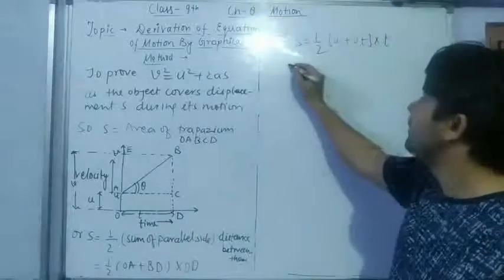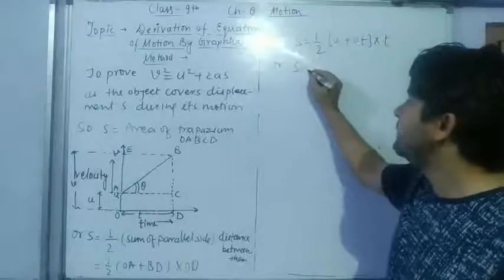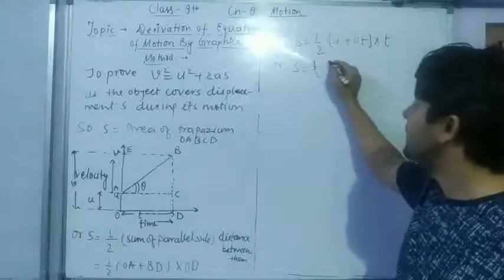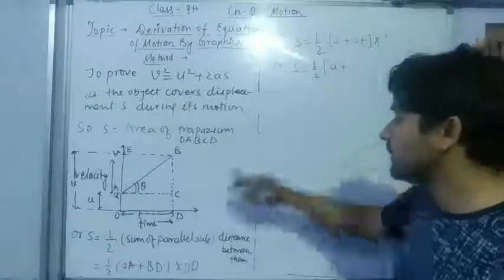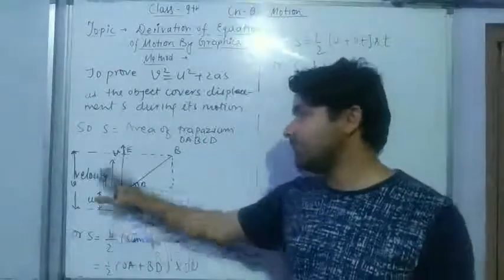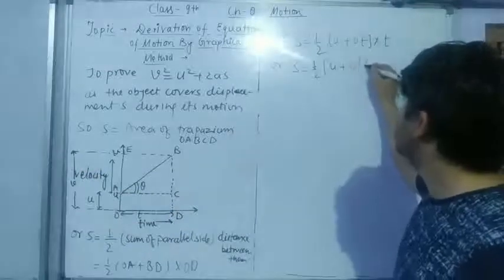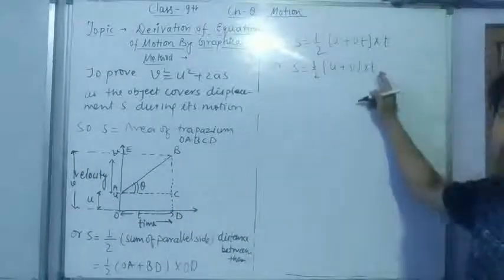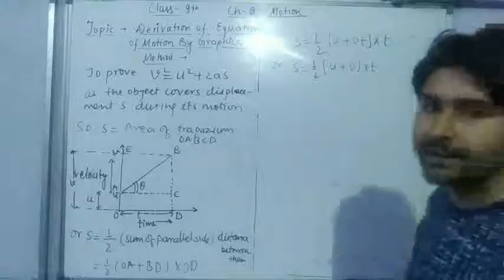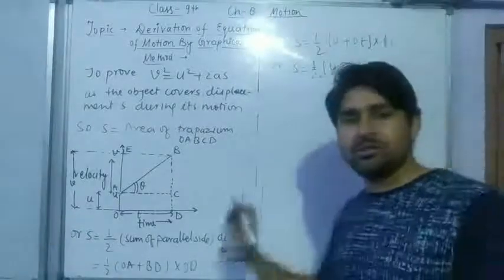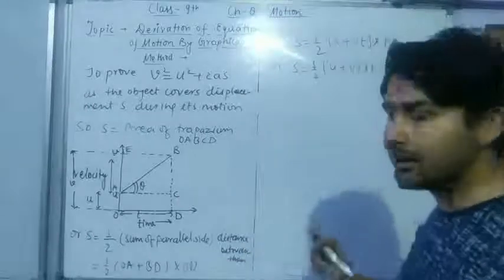Or we may write s equals to 1/2, 1/2 U plus this OE is equal to V, multiply this time T. Now here an important point comes, this time T, this time T's value, we will derive from the first equation of motion.